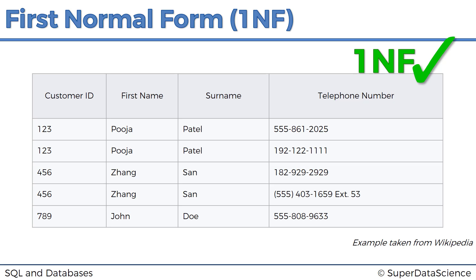The interesting thing about normal forms is that the first normal form is very easy and simple to understand. Whereas from there, the difficulty skyrockets. Normal forms 2 and 3 will take quite some effort to get through — it'll be a challenge to understand and remember them. And that's why right now I wanted to propose that we use a mnemonic — a phrase that is used to remember the different normal forms. Let's have a look at it.